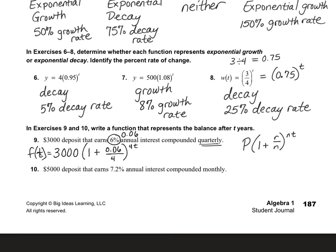Number 10, go ahead and do number 10 on your own. This time it's compounded monthly. So think about what that's going to be instead of a 4, like we did in number nine. All right, so you should have gotten 5,000 for the principal. And then 7.2% is 0.072. Make sure you did that right. Divided by 12 because there's 12 months in a year, all to the power of 12t.